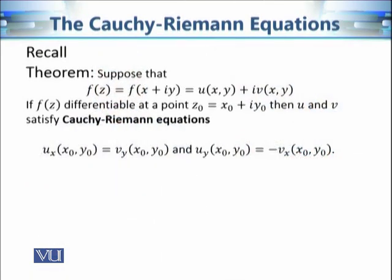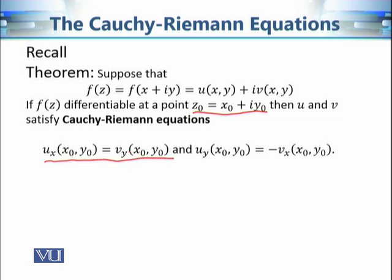Let's recall what the Cauchy-Riemann equations are. Given a function with components u(x, y) + i·v(x, y), the Cauchy-Riemann equations at point z₀ = x₀ + i·y₀ are: the partial derivative of u with respect to x at (x₀, y₀) must equal the partial derivative of v with respect to y at (x₀, y₀), and the partial derivative of u with respect to y at (x₀, y₀) must equal the negative of the partial derivative of v with respect to x at (x₀, y₀). If the function is differentiable, these equations are satisfied.